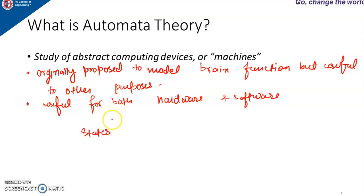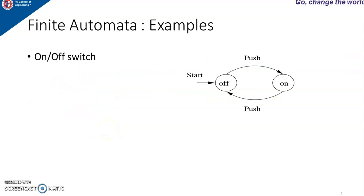Each finite automata has some states which it can remember as useful information. Let us see what is finite automata. This is the example of finite automata — an on/off switch. You can see here these are the two states, represented using circles: on and off.